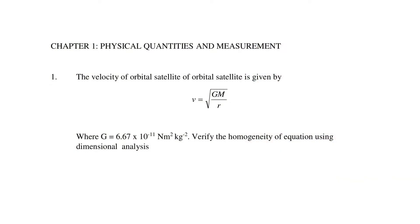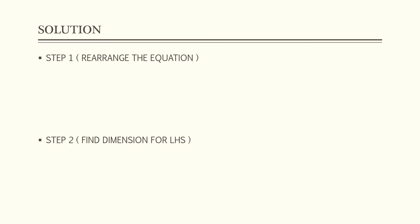This is the question for chapter 1 for physical quantities and measurement. The velocity of orbital satellite is given by V equals the square root of GM over R. Given G equals 6.67 times 10 to the negative 11 Newton meter squared per kilogram squared, verify the homogeneity of the equation using dimensional analysis. So we look step back and we solve this question.